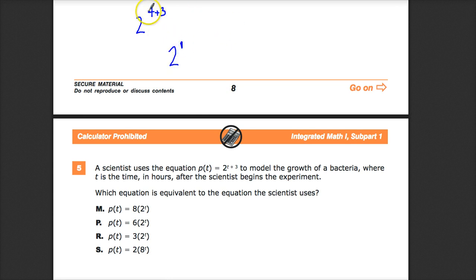So, if T is 1, 2 to the 1 plus 3 equals 4, 2 to the 4th. So, I'm really comparing these things. If T is 2, then this is 5.